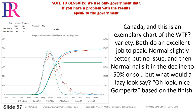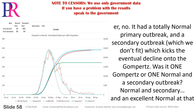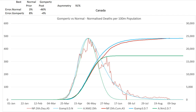Canada — an exemplary chart. Both curves do an excellent job to peak; normal slightly better, but no issue. Then normal nails it in the decline to 50% or so. But what would a lazy look say? Oh look, nice Gompertz — based on the finish. No — it had a totally normal primary outbreak, and a secondary outbreak which we don't fit, which kicks the eventual decline onto the Gompertz. Was it one Gompertz or one normal and a secondary outbreak? Normal and secondary — and an excellent normal at that.